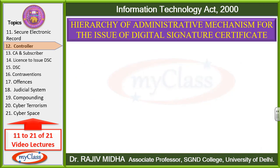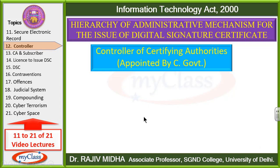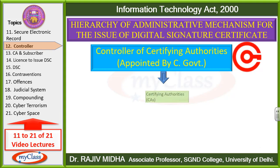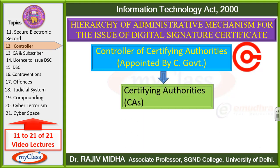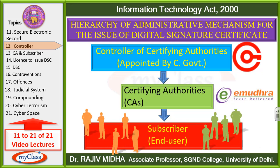Hierarchy of administrative mechanism for the issue of digital signature certificate. Digital signature certificate ko issue karne ke liye: at the top we have Controller of Certifying Authorities, then we have Certifying Authorities — for example, e-Mudra, it is one of the certifying authorities — and at the bottom we have subscribers and users, meaning they are the ones who are using digital signatures.